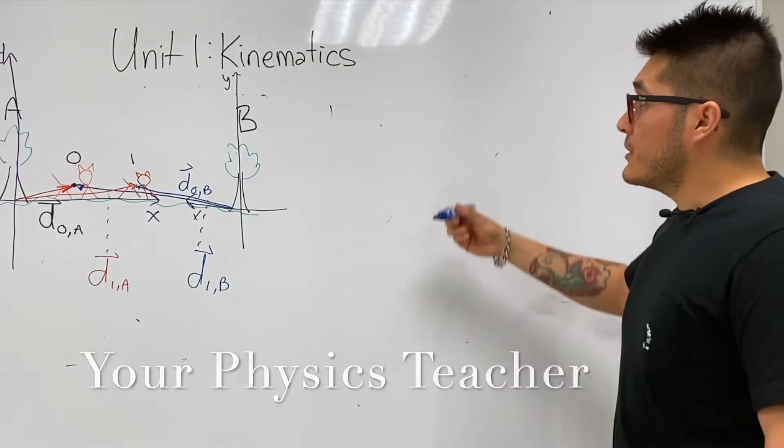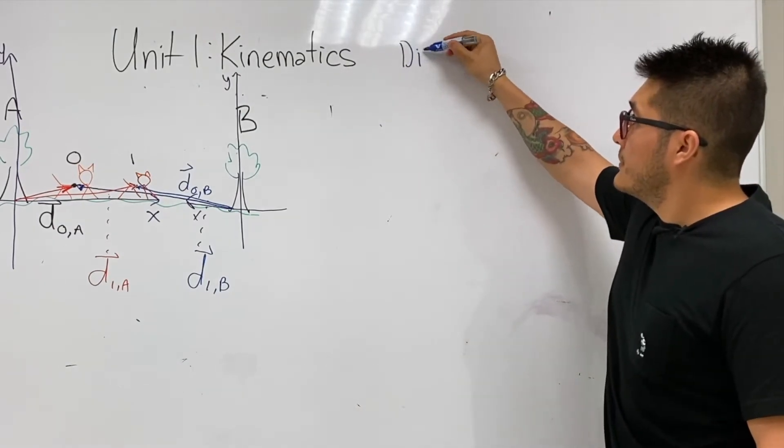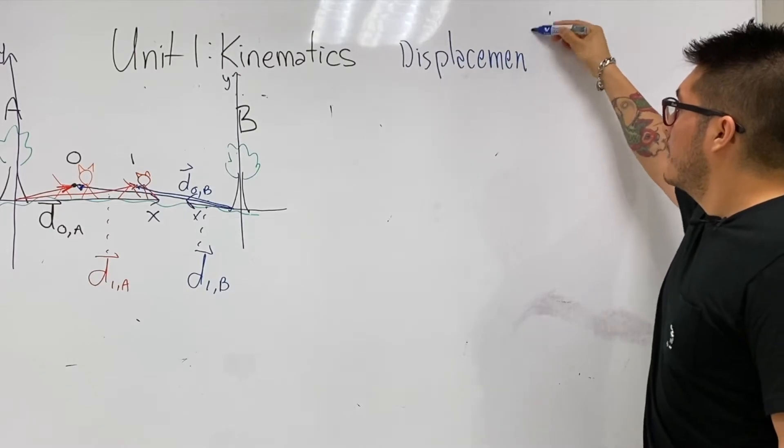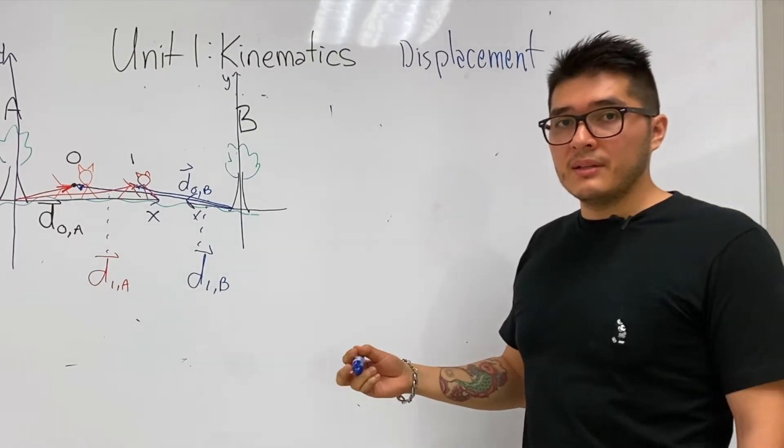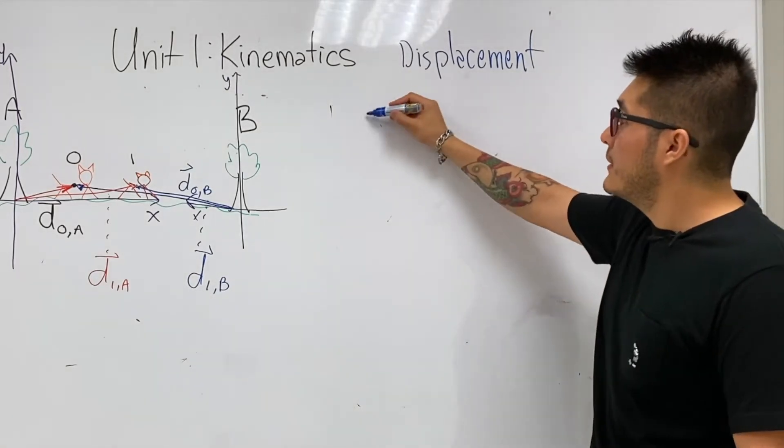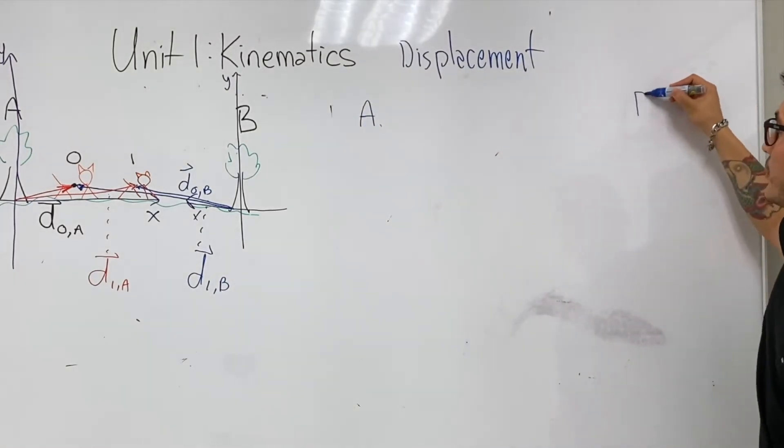So if you recall, we introduced a quantity called displacement. What was the displacement? The change in the position vector. So we have two displacement vectors to consider for A and B.